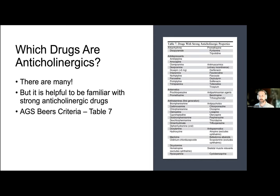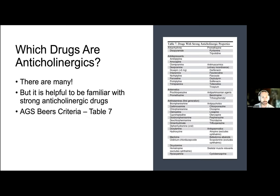What are the drugs that are considered anticholinergic? There are many—dozens of them—and drugs vary in their anticholinergic activity. It's most important to know clinically those that are strongly anticholinergic. The Beers Criteria has a handy table of strong anticholinergic drugs, which includes medications such as diphenhydramine or Benadryl, oxybutynin, and cyclobenzaprine, among many others. Use this as a reference if you're looking for a succinct list of strong anticholinergic drugs.